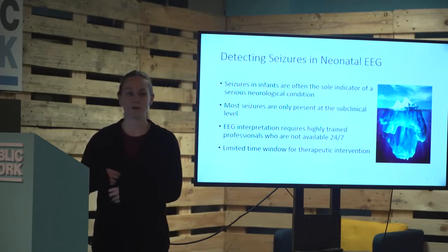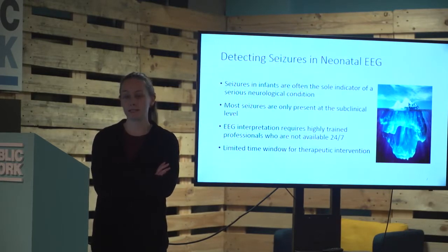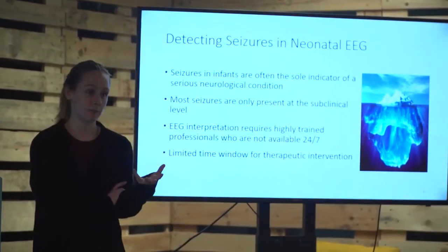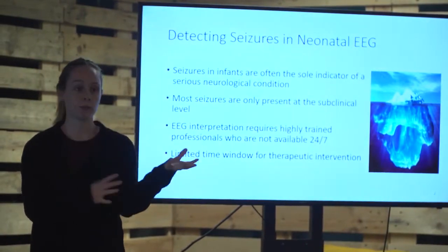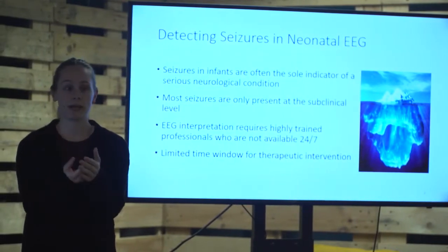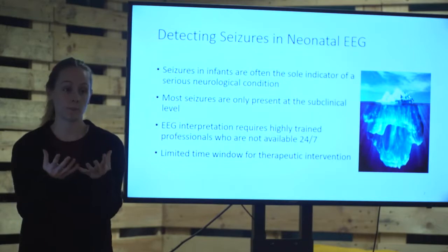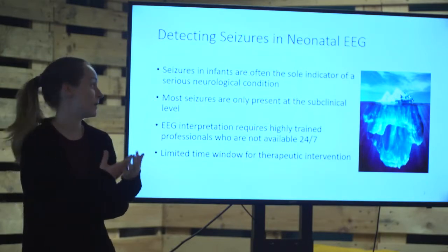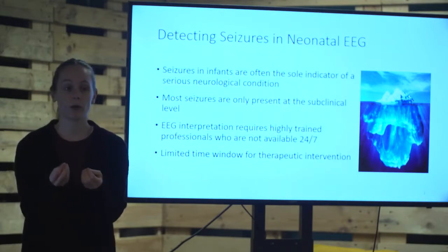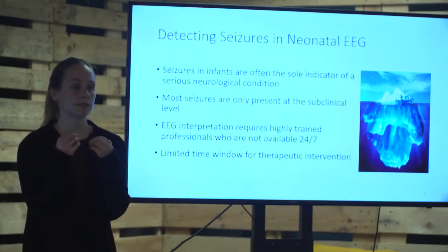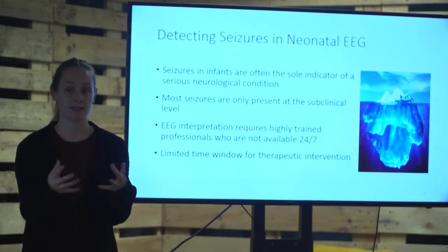Seizure detection in neonates is very important and also very difficult. When a baby is born, if they suspect something is happening in the brain, they hook it up to electrodes to look at brain activity — often the only indicator of a deep problem. We also have medicines that can treat seizures, but only as the seizure is happening, so we can't retrospectively treat them. It's important to detect them quickly so we can alert doctors or nurses.